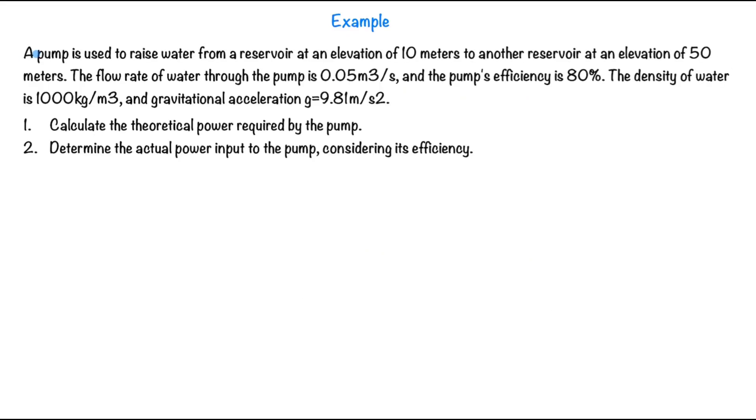Let's look at an example. A pump is used to raise water from a reservoir at an elevation of 10 meters to another reservoir at an elevation of 50 meters. The flow rate of the water through the pump is 0.05 meters cubed per second and the pump's efficiency is 80 percent. The density of water is 1000 kilograms per meter cubed and the gravitational acceleration is 9.81.